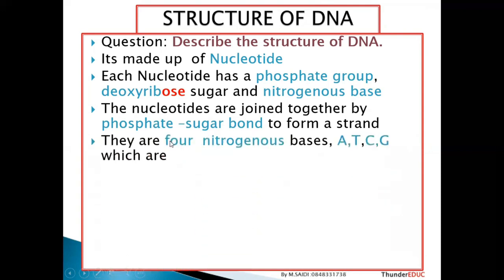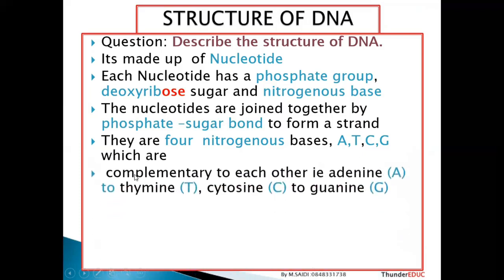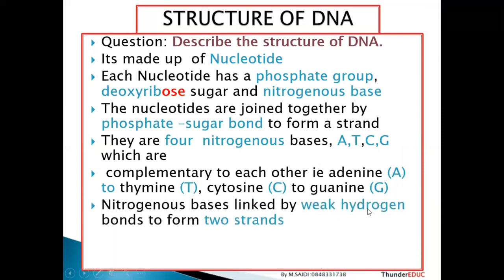There are four types of nitrogenous bases. Mention them: adenine, thymine, cytosine, and guanine. If it is RNA, then you talk about adenine, uracil, cytosine, and guanine. These bases are complementary to each other. In DNA, adenine pairs with thymine and cytosine pairs with guanine — it doesn't matter if you say thymine goes with adenine or guanine goes with cytosine, as long as you pair them correctly.